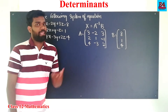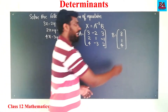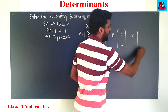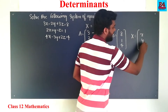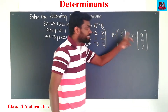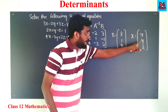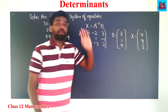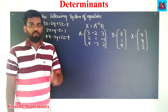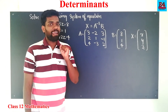And x is the variable vector containing x, y, and z. So x, y, and z are the variables. In that case, x equals A inverse into B.